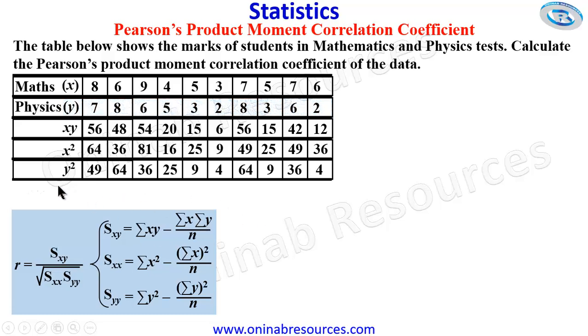So we start with Sigma X, summing up all the X's. That is the scores for maths. If you sum them up, we have 60.